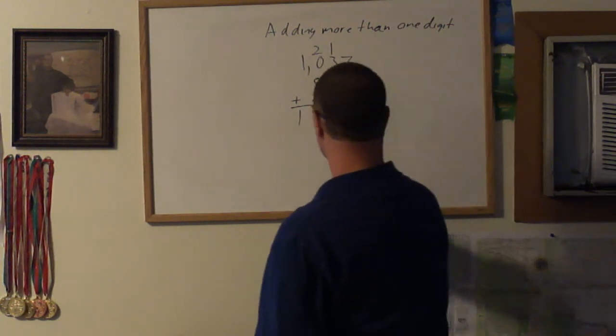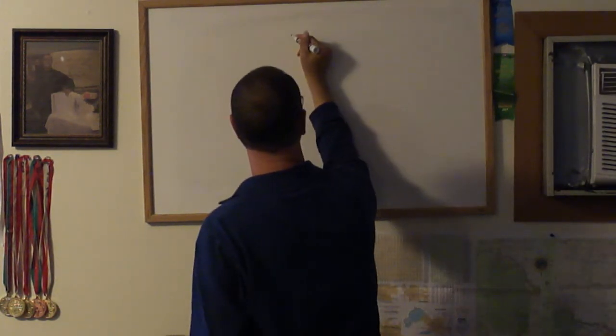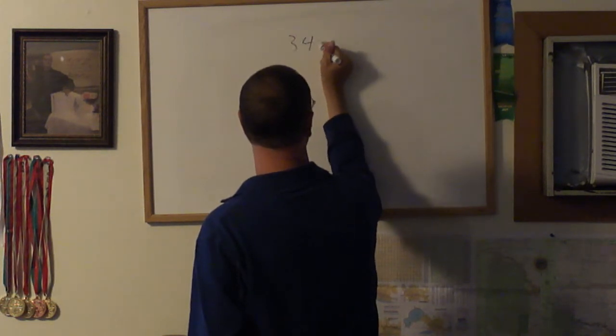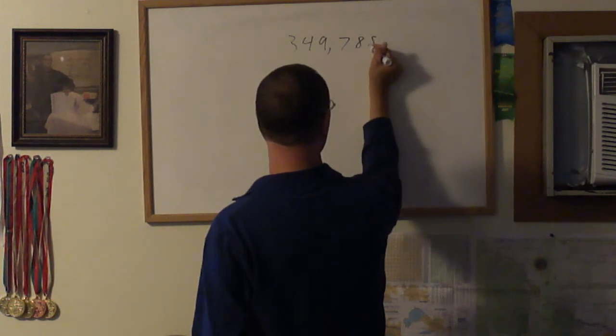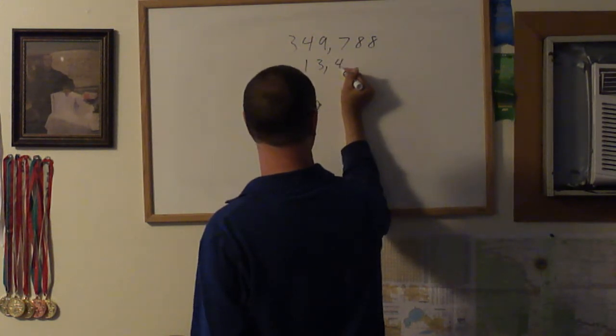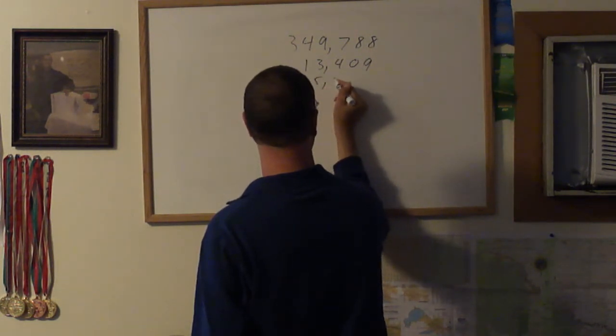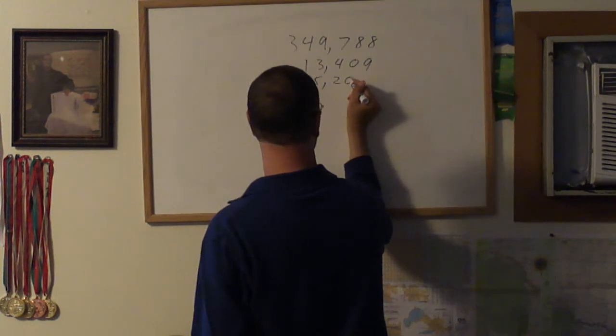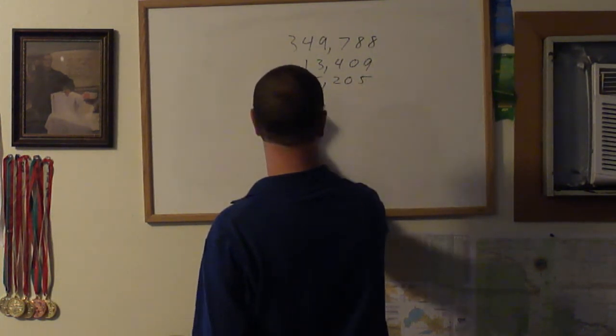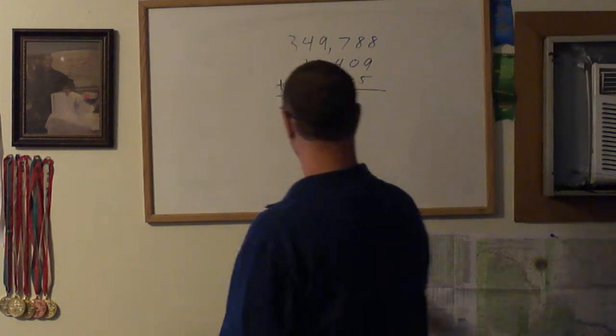Alright! Now let's add something a lot harder. Let's add 349,788, 13,409, and 25,205. Let's add them up. This is one more example before we quit.